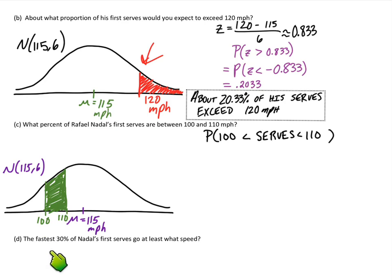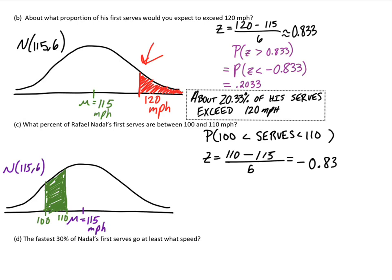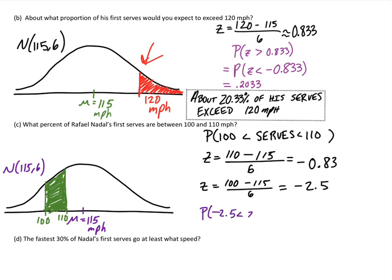We need the z-score for both values. The z-score for 110: subtract the mean, divide by the standard deviation — that's negative 0.83. And for 100: subtract the mean, divide by the standard deviation — the z-score is negative 2.5 standard deviations below the mean. So the equivalent question in terms of z-scores is: what proportion of z-scores falls between negative 2.5 and negative 0.83?